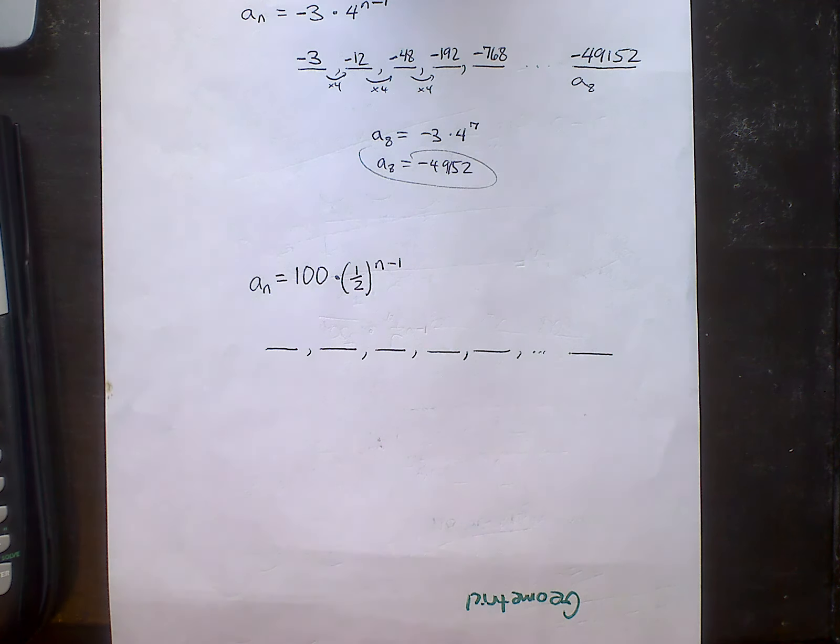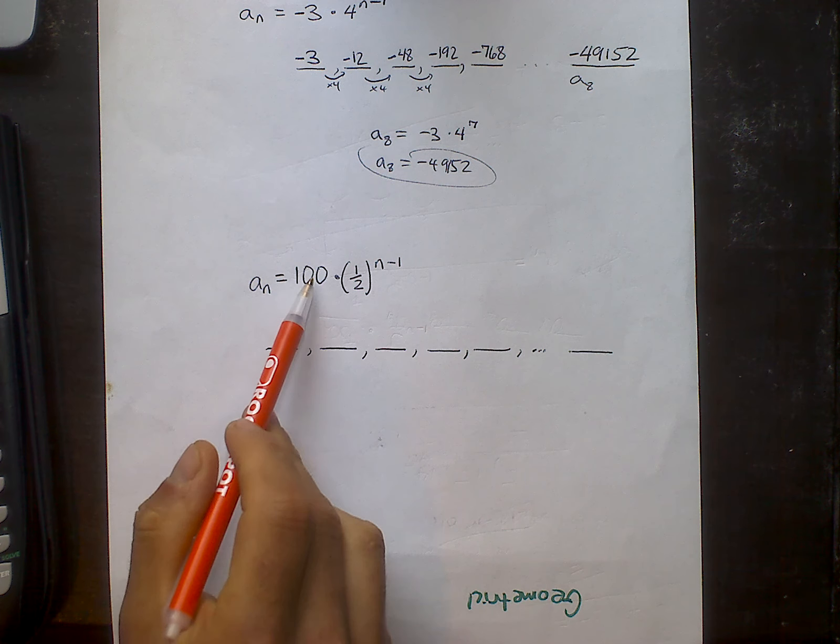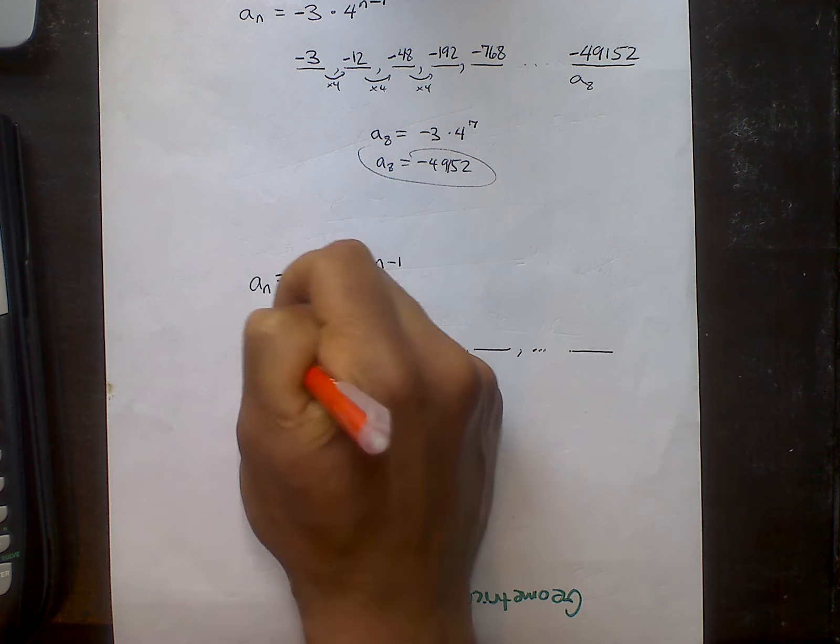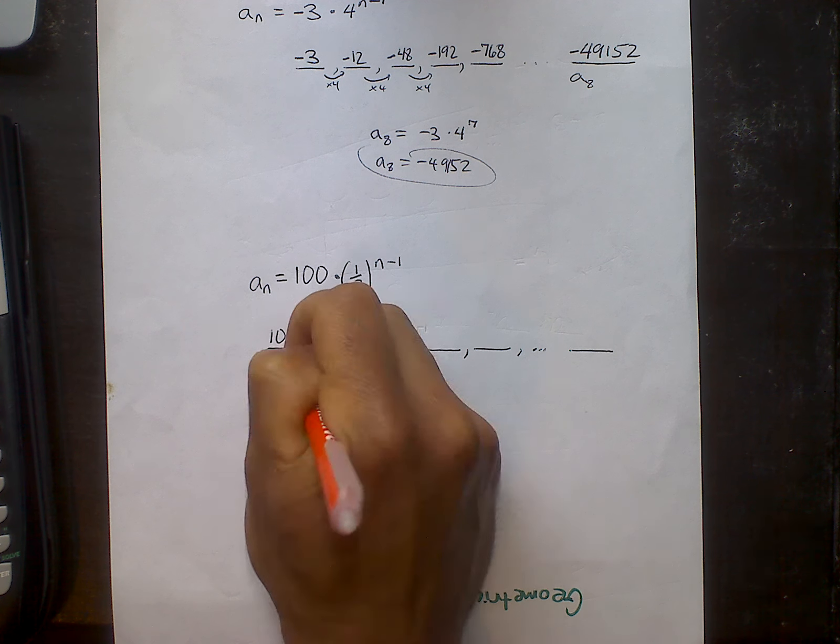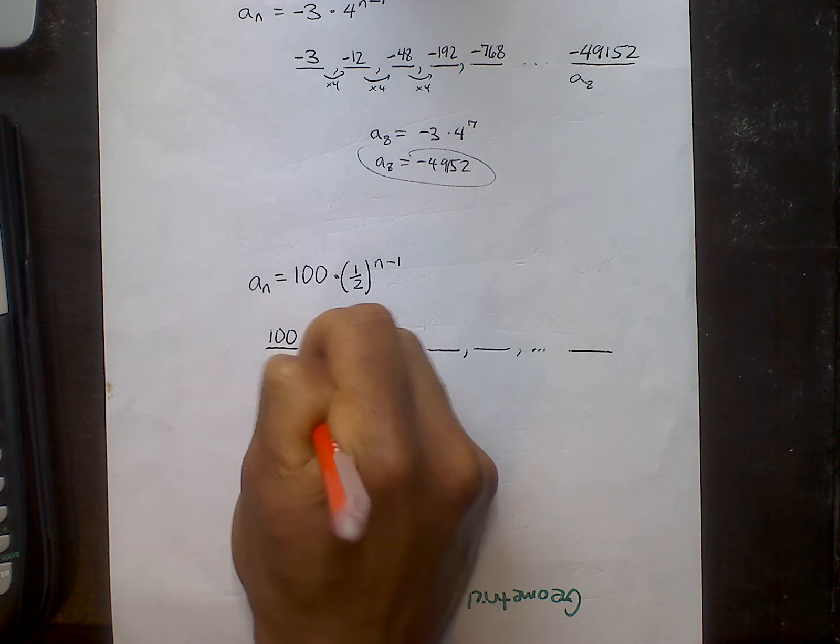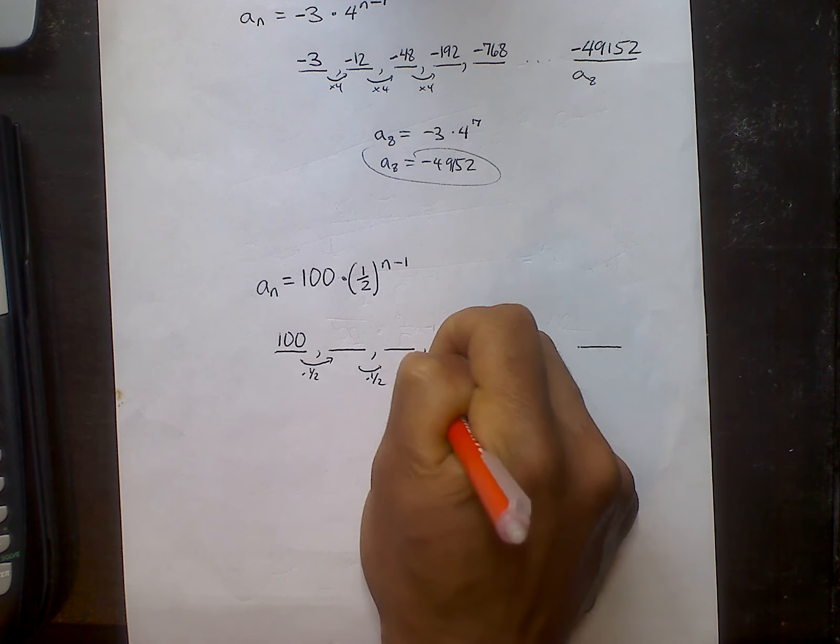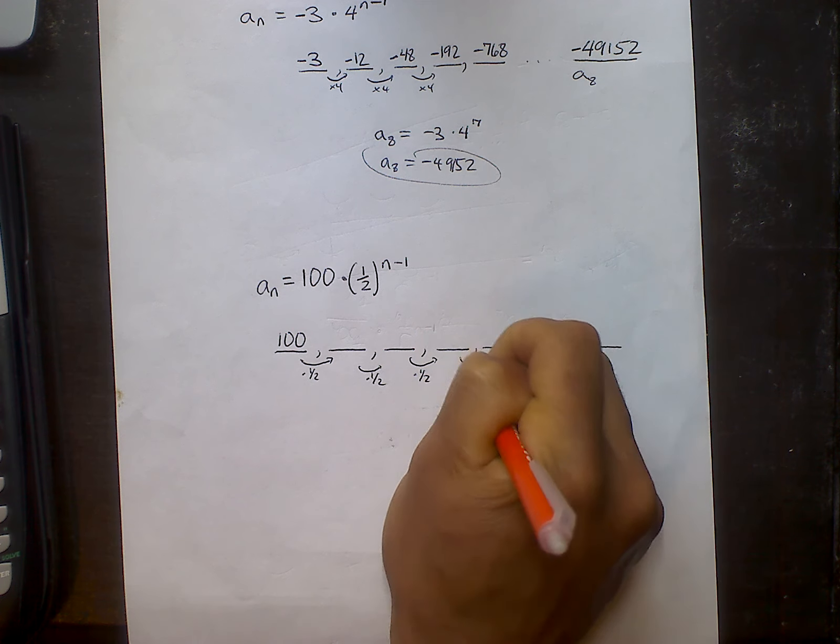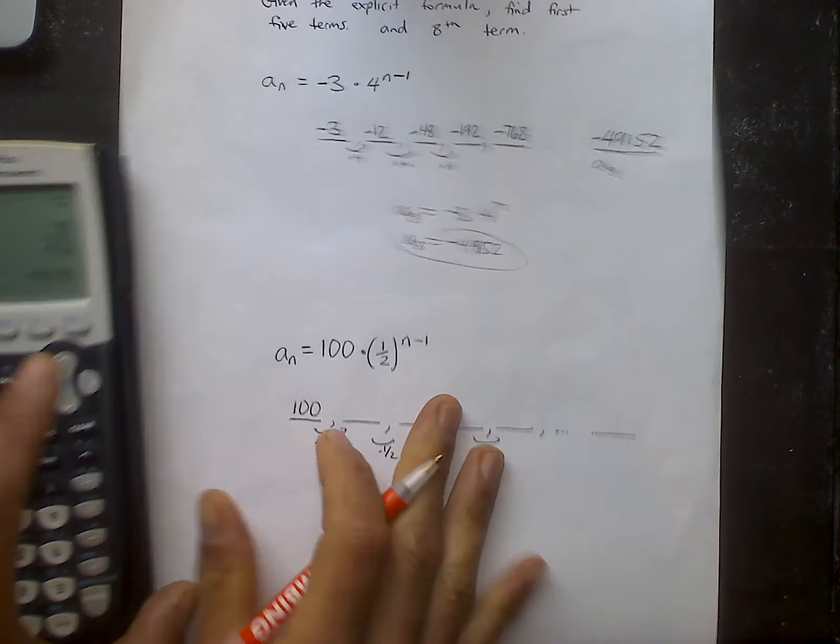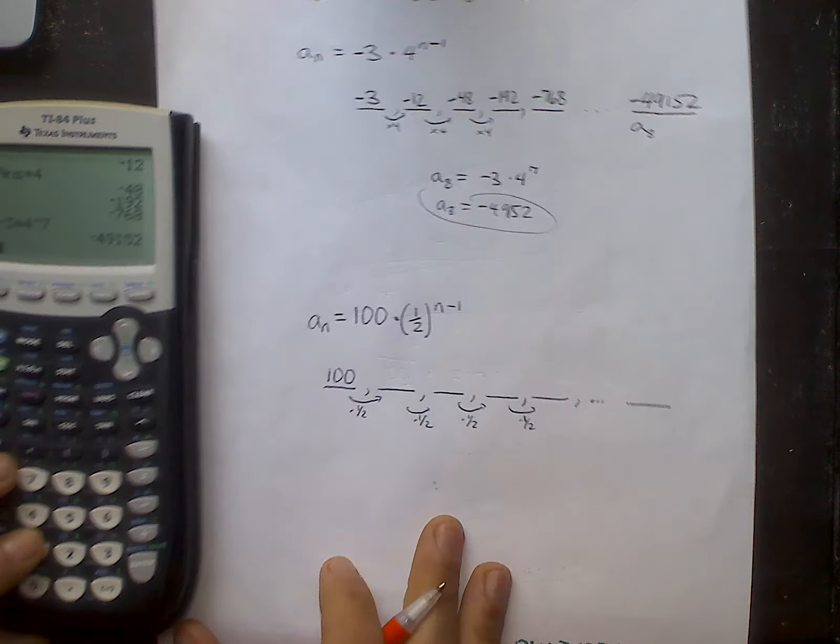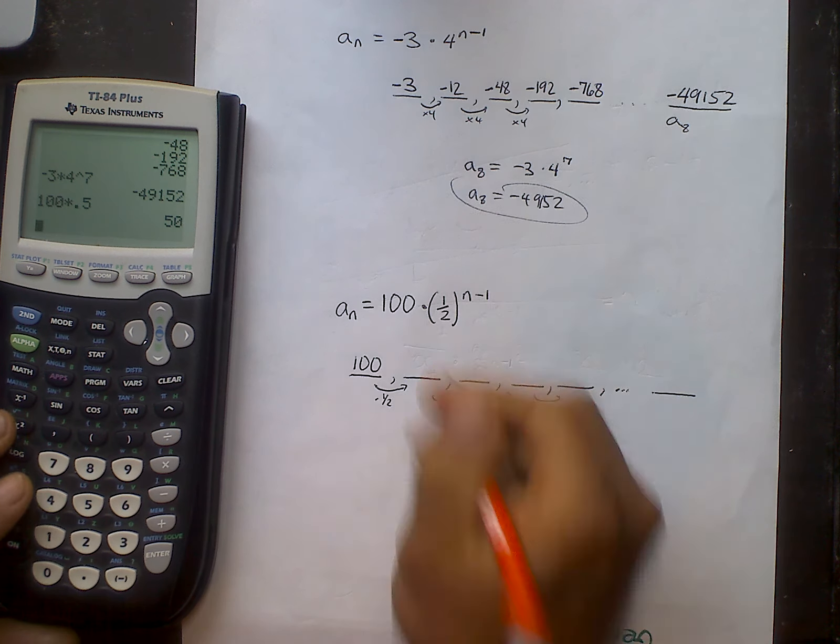Okay, one last example before you guys can try the assignment. In this particular case, the first term is 100. The common multiplier, the common ratio, is a fraction. And you might remember when you're multiplying by a fraction, the numbers are getting smaller each time. It's like an exponential decay problem.